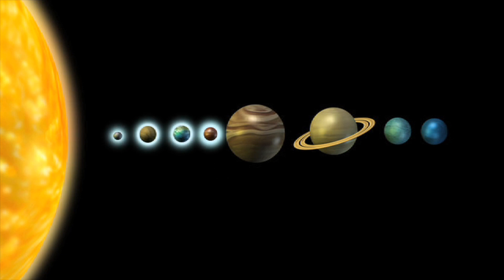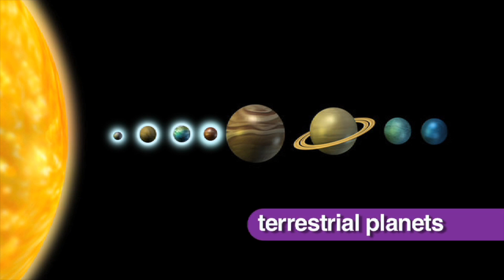These planets are small and made mostly of rock and metal. Because they are rocky, they are also called the terrestrial planets.